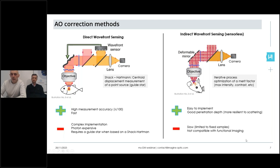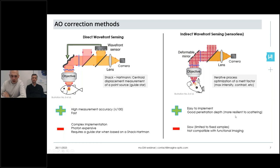However, since sensorless AO requires a set of images, it is far slower than the direct wavefront sensing approach, so it's usually limited to fixed samples, not moving samples. For example, it's not applicable in ophthalmology, and usually not compatible with functional imaging in microscopy.